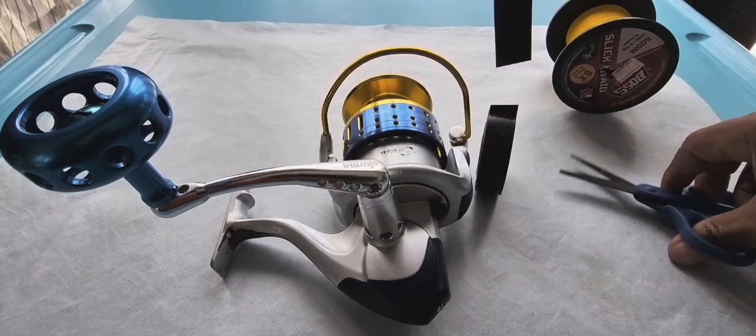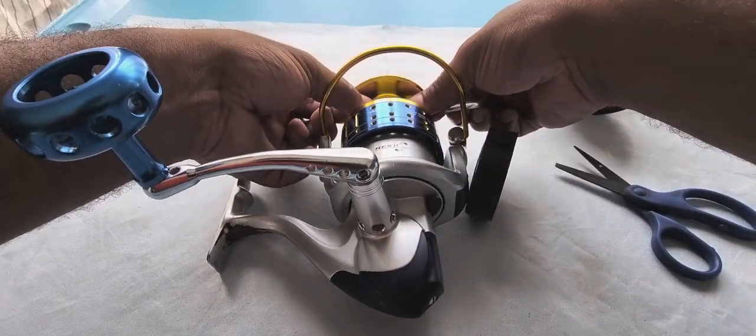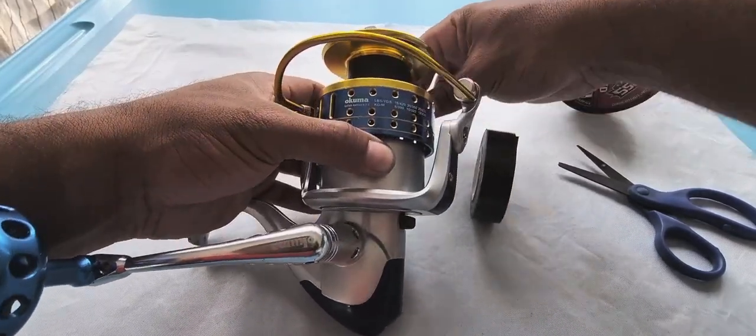So the first thing you are going to do is snip a piece of insulation tape and wrap it around the reel. This makes it easier for the braid to grip when reeling on the first few strands of braid.